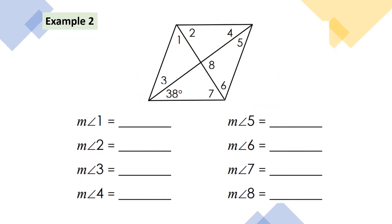Now let's look at Example 2 — finding the measures of angles 1 through 8. I like to label everything I know. From the 38-degree angle, I know this angle is also 38 because diagonals bisect the angles. And angles 4 and 5 are also 38 because opposite angles are congruent.